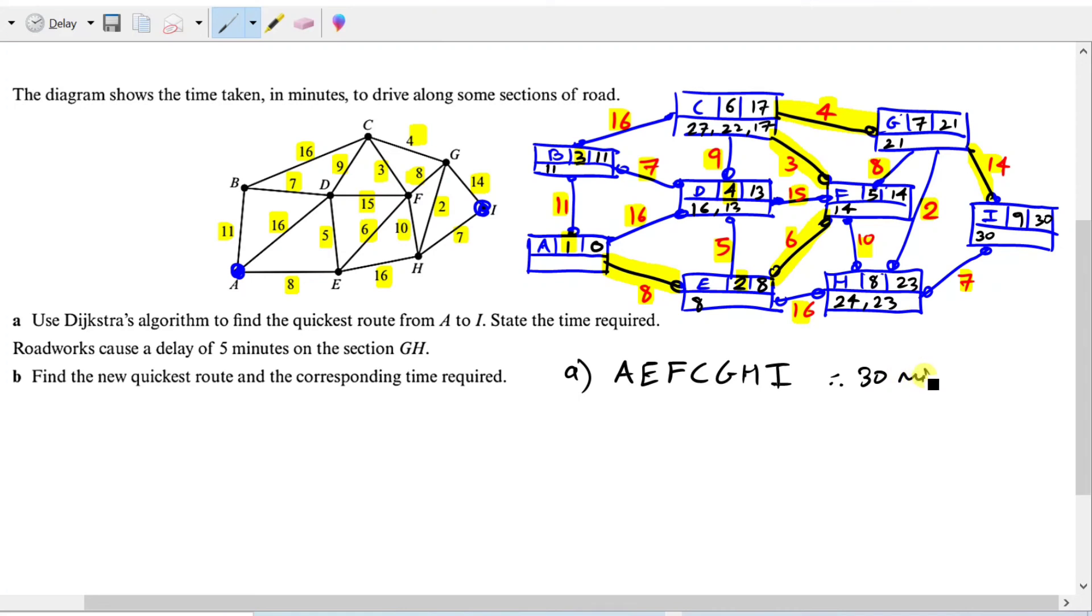Whereas for part B it says now that roadworks cause a delay of 5 minutes on the section GH. So let's find section GH. Okay here's GH. So here's a 5 minute delay, so now the 2 has increased by 5, so now it's 7 minutes. So because of that we may not be able to rely on the same route. So to find the new quickest route, let's start again from the beginning.